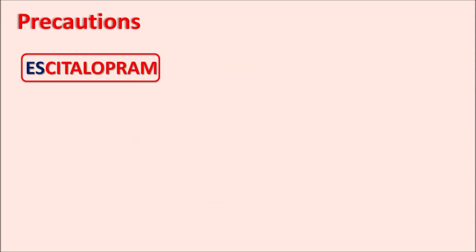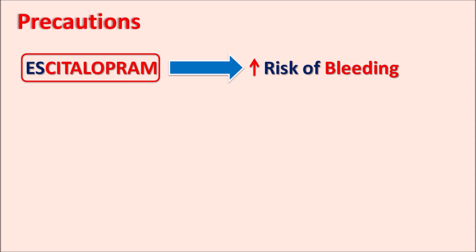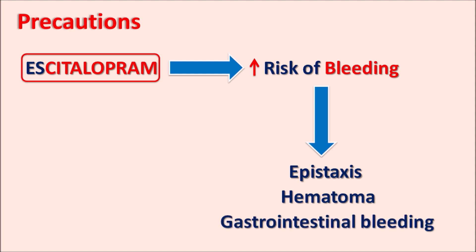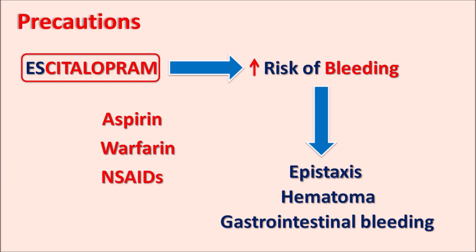Another important precaution is that escitalopram can increase the risk of bleeding. On prolonged use, this drug can increase epistaxis (nasal bleeding), hematoma, and gastrointestinal bleeding. This risk is further increased with other drugs like aspirin (antiplatelet agent), warfarin (oral anticoagulant), and NSAIDs, which also increase the risk of bleeding. These drugs should be carefully co-administered with escitalopram.